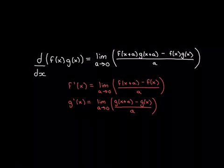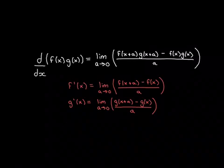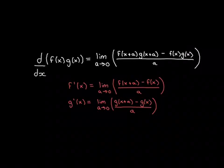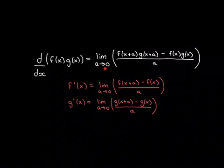We're aiming to end up with a formula involving the derivative of f(x) and the derivative of g(x). So we need to get the definitions of f'(x) and g'(x) into this expression. Remember, f'(x) is the limit as a approaches 0 of [f(x+a) − f(x)] / a, and similarly for g'(x). We want to get these structures inside our limit, because then as a approaches 0 they will turn into f'(x) and g'(x).